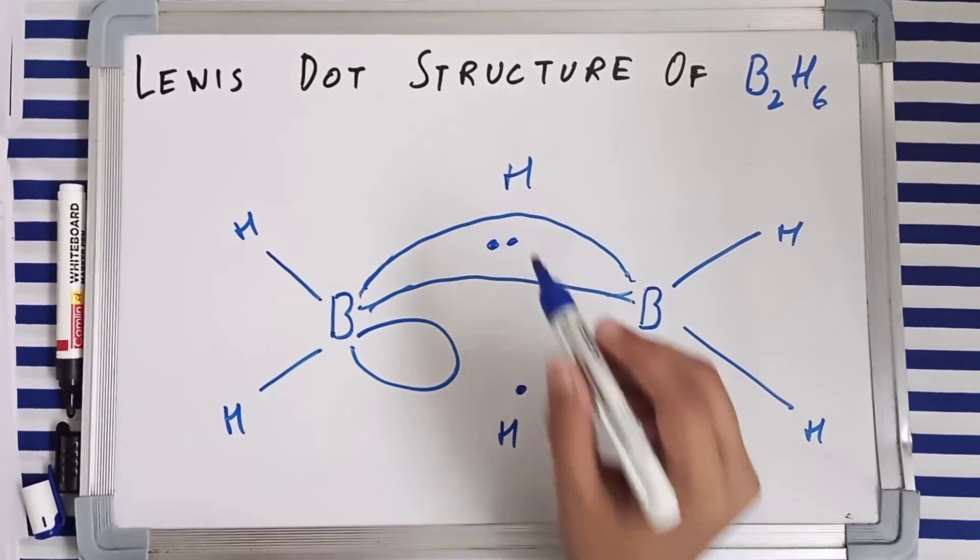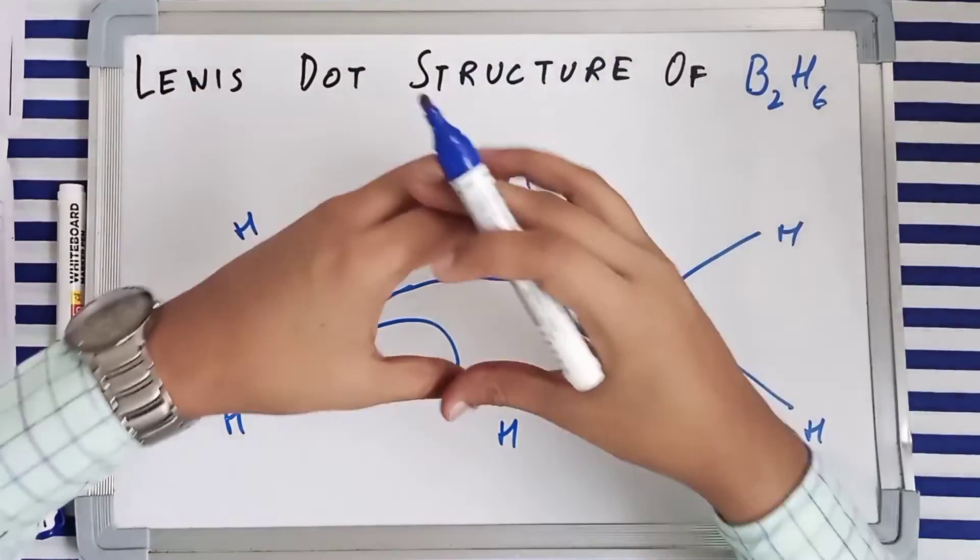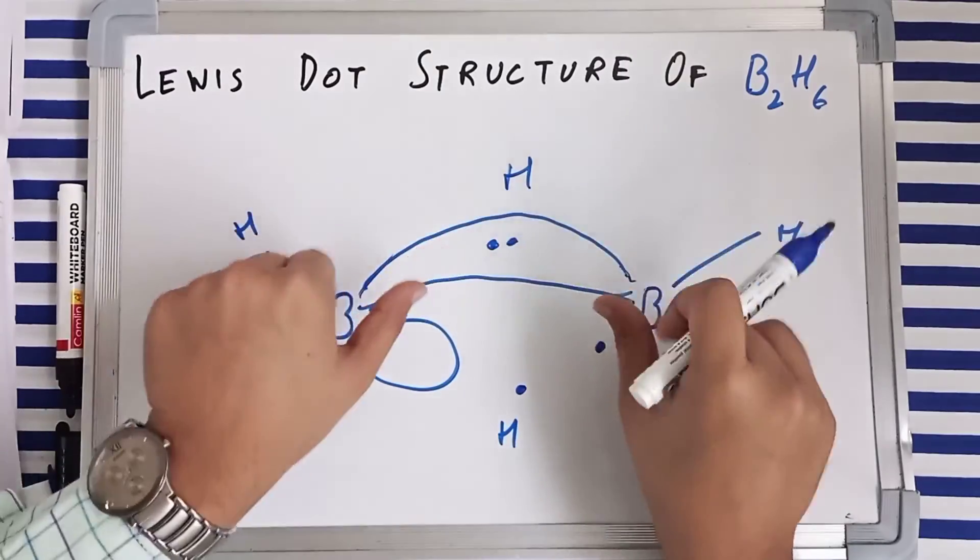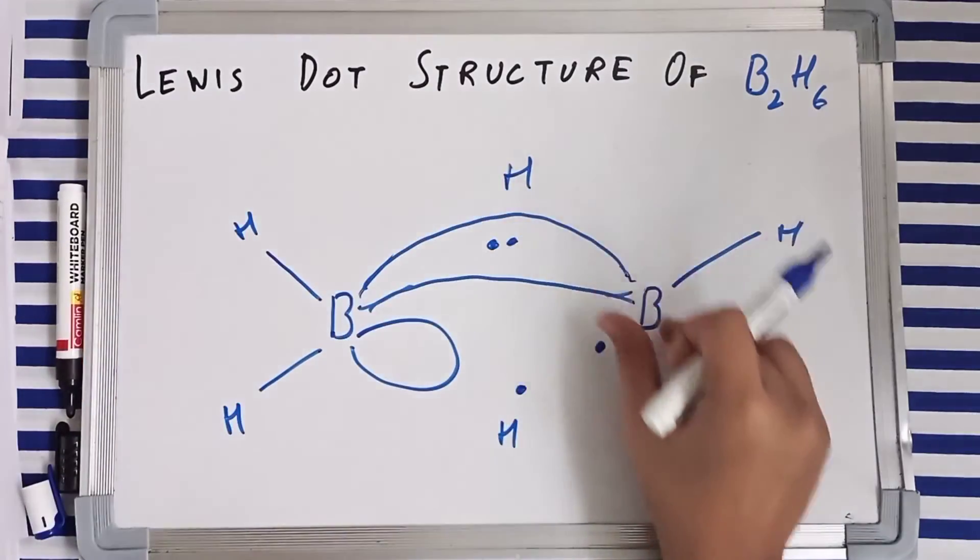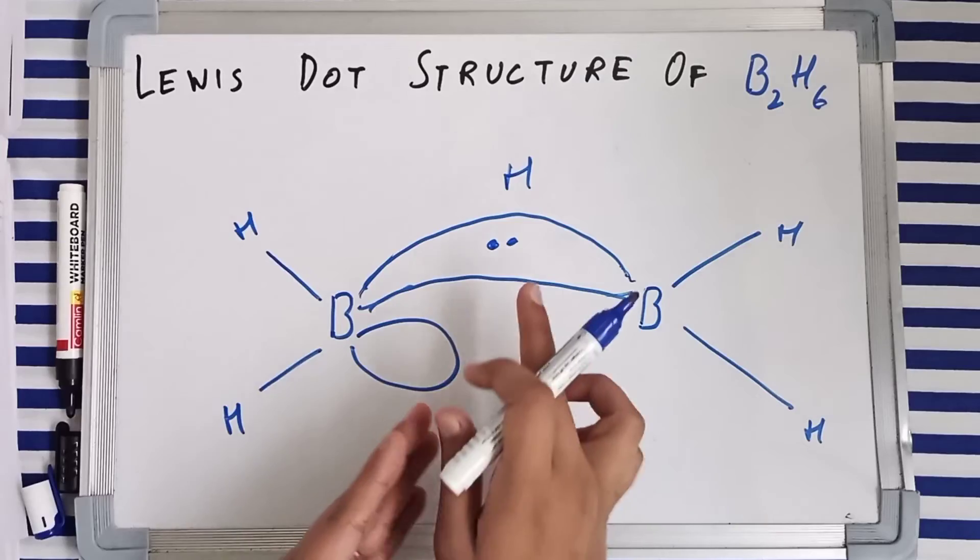Why is it called banana bond? Because those three orbitals have come along together and now they have formed a single unit and its shape is like a banana.